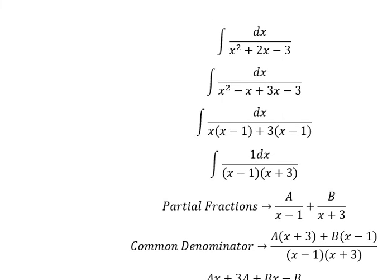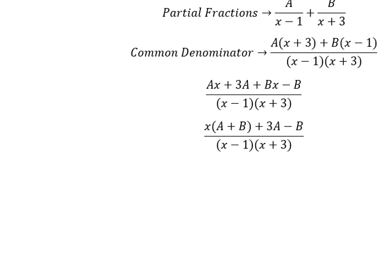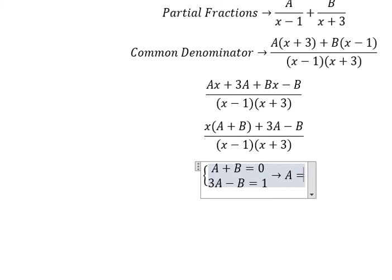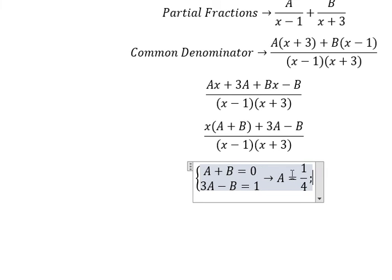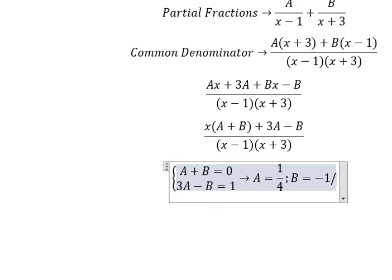And now we create the system of equations. Now we need to find the solutions of A and B. So A equals 1 over 4, B equals negative 1 over 4.